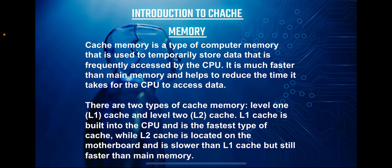By having multiple levels of cache memory, computer systems can take advantage of the speed benefits offered by each level. The CPU first checks the L1 cache for data it needs. If it's not found, it proceeds to search the L2 cache. And if the data is still not found, the CPU then retrieves it from the main memory.